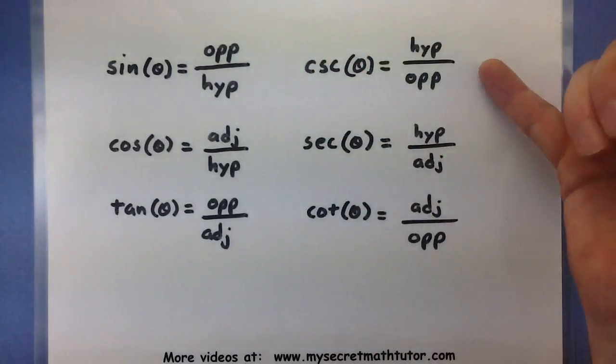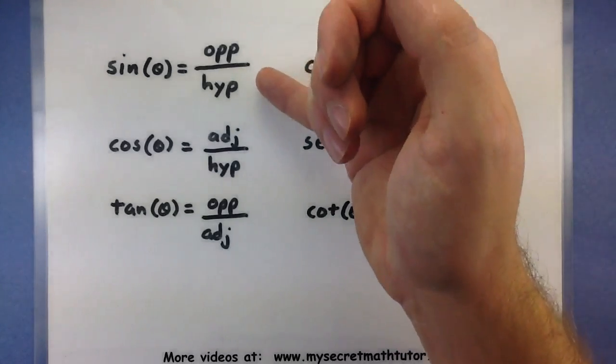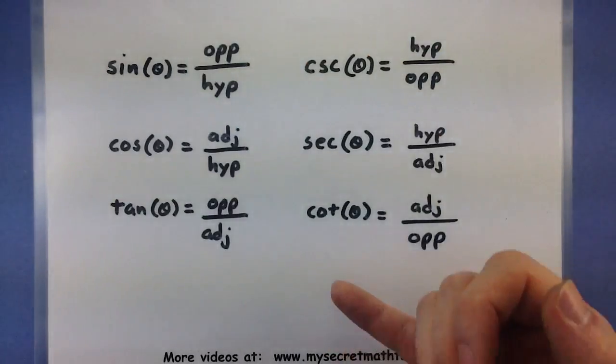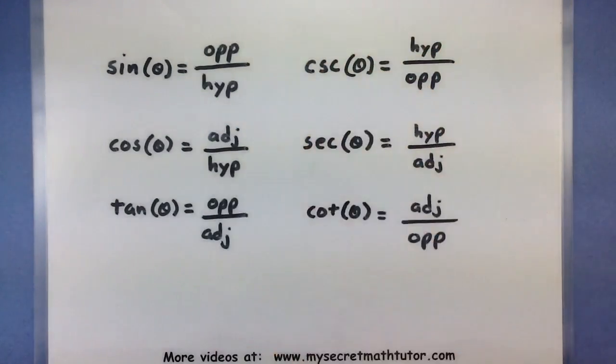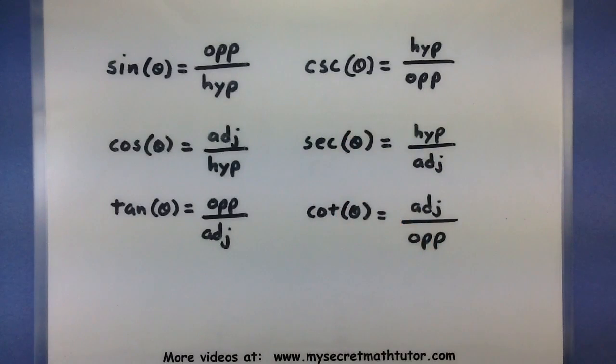You can see after that equal sign, I have all of these abbreviations for the sides that are being compared. So for sine, I have the opposite side divided by the hypotenuse. Cosine is the adjacent side divided by the hypotenuse. And tangent is the opposite side divided by the adjacent side.